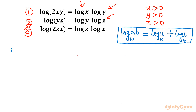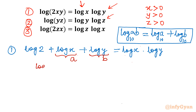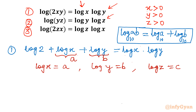Applying the property to equation 1: log(2xy) becomes log 2 + log x + log y, so equation 1 becomes log 2 + log x + log y = log x · log y. Now I will use substitution: let log x = a, log y = b, log z = c. So equation 1 becomes log 2 + a + b = a·b.